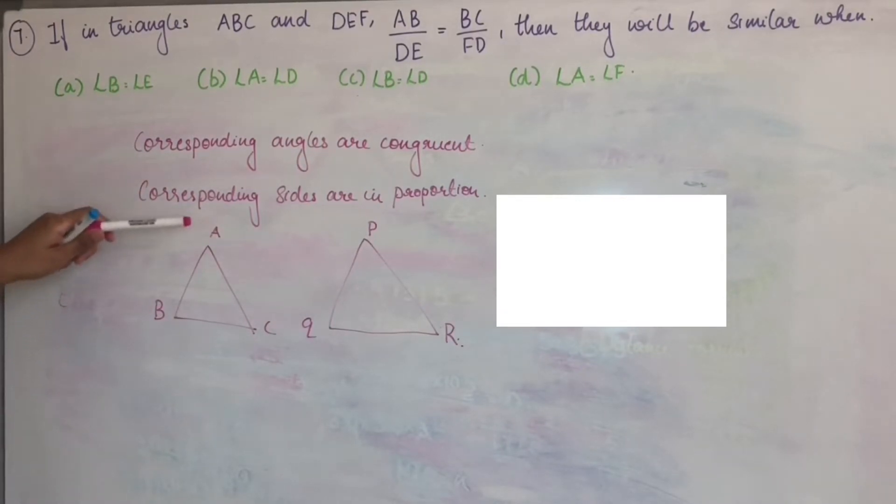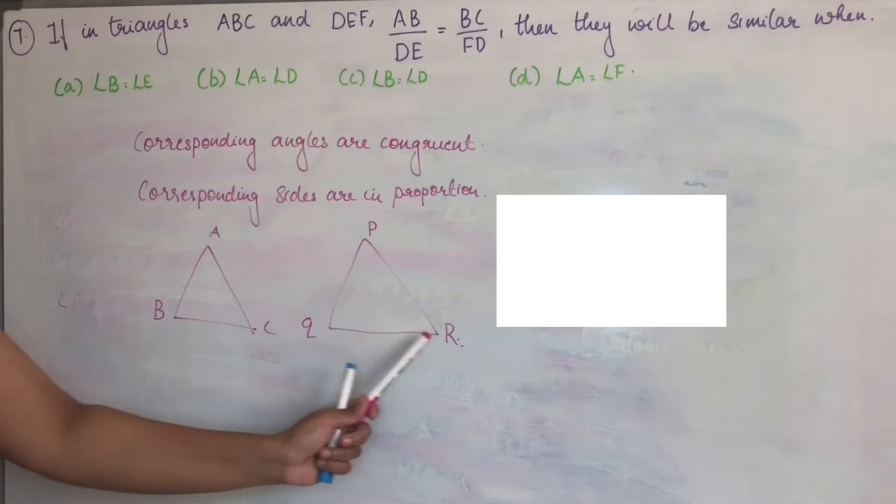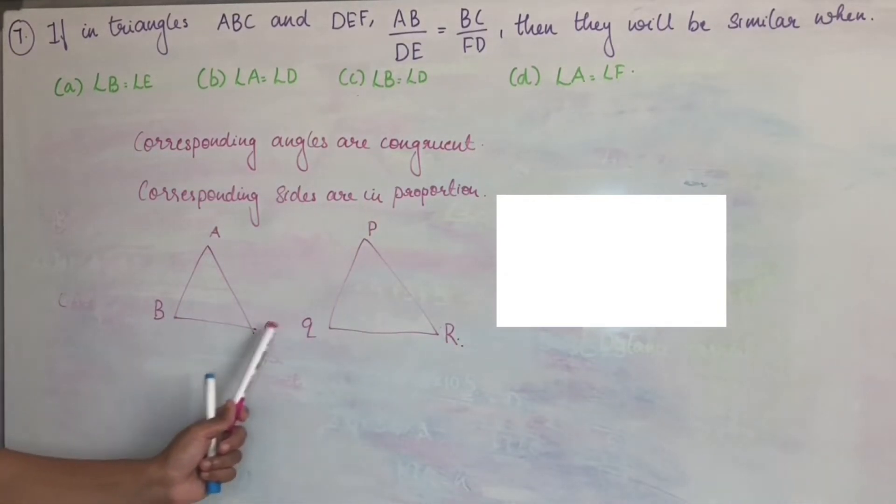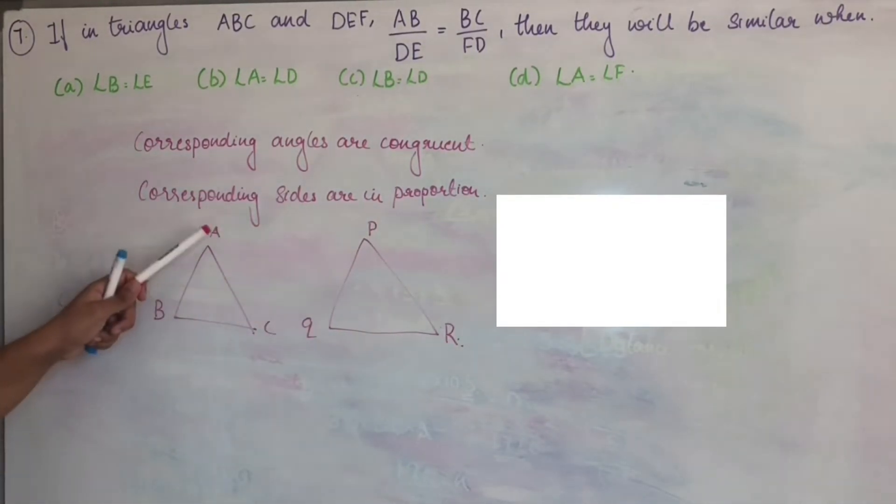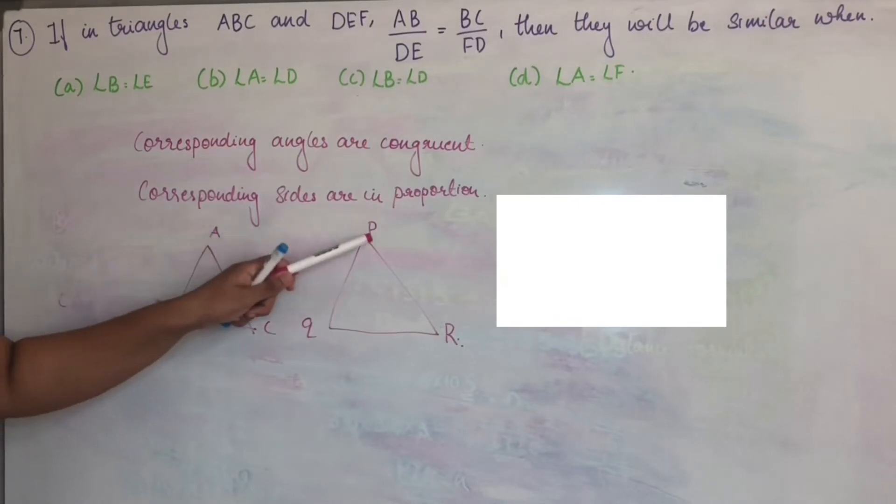AB, AB corresponding side PQ. So AB by PQ equal to BC corresponding side QR. BC by QR equal to AC corresponding side PR. AC by PR.